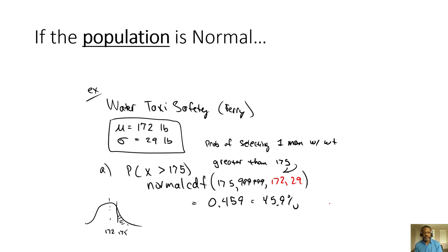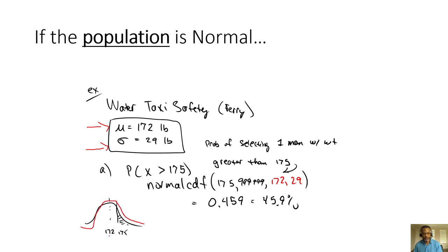If the population is normal — once you know the distribution — you can use math or your calculator to figure out area and proportions. The population is normal, the mean is 172, and the standard deviation is 29. We can right away draw the curve. Those three pieces of information — it's normal, the mean, and the standard deviation — let us draw the curve immediately.